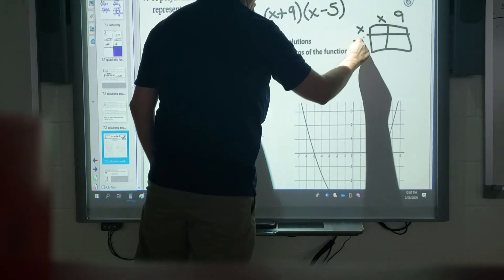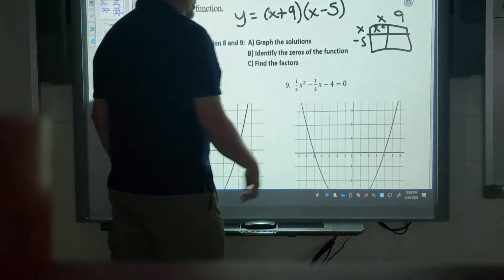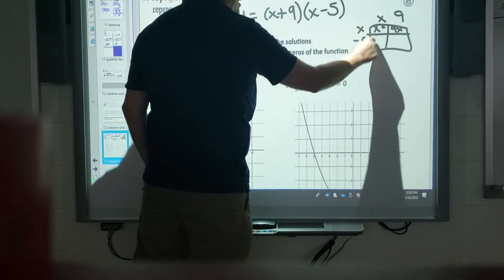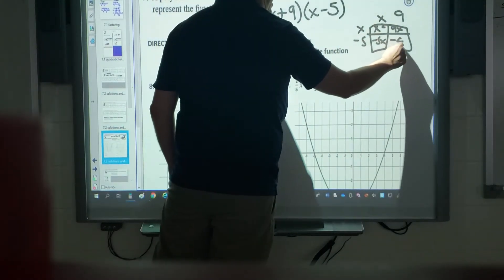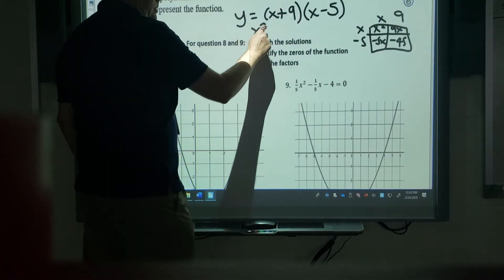x and 9, x and negative 5. x times x is x squared. x times 9 is 9x. Negative 5 times x is negative 5x. And negative 5 times 9 is negative 45.